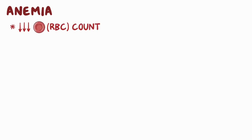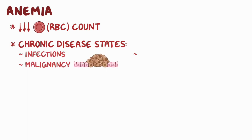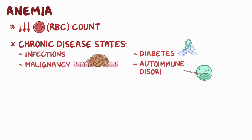Anemia of chronic disease refers to a low red blood cell, or RBC, count that may be associated with many chronic disease states like infections, malignancy, diabetes, or autoimmune disorders.